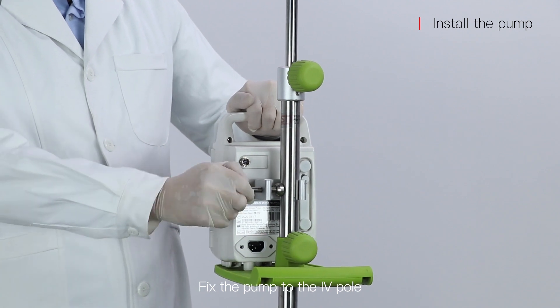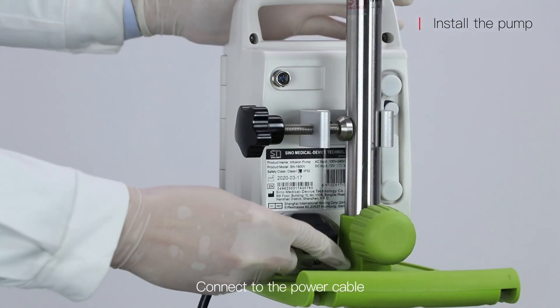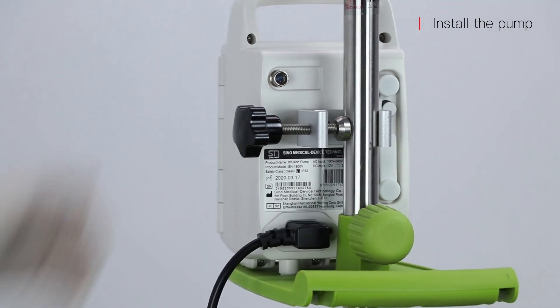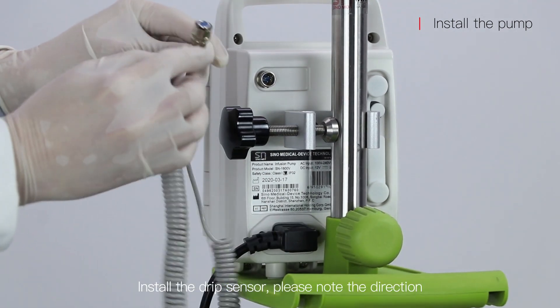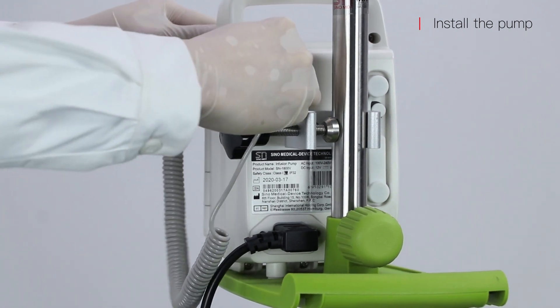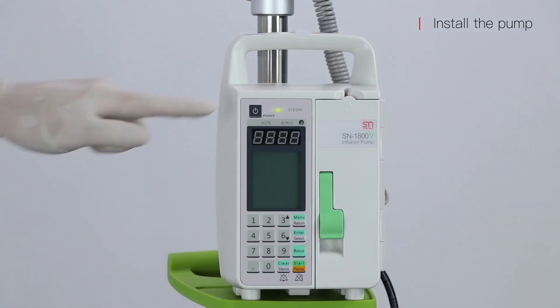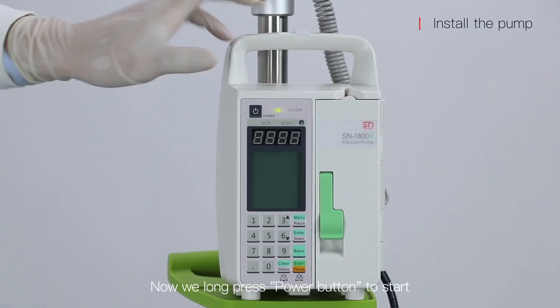Fix the pump to the IV pole. Connect the power cable. Install the drip sensor, please note the direction. Long press the power button to start.